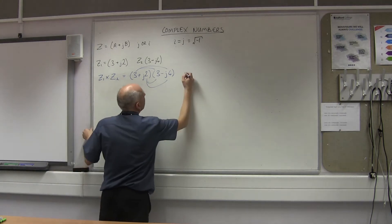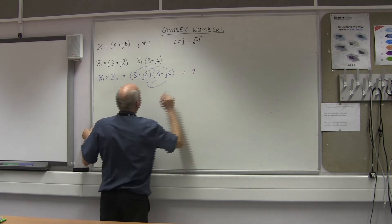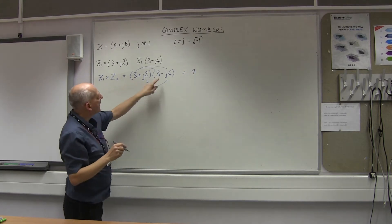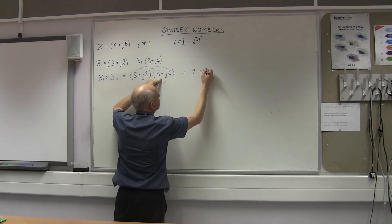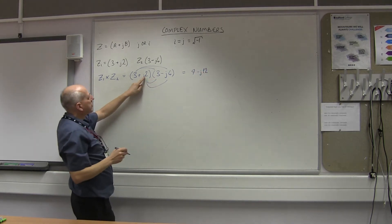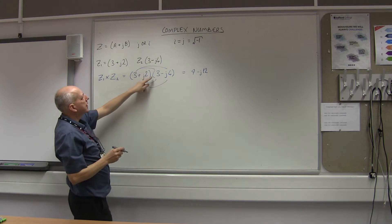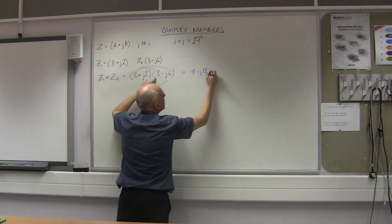So 3 times 3 is 9. And then 3 times minus J4 is going to give us minus J12. And then going inside, plus J2 times 3 will give me plus J6.